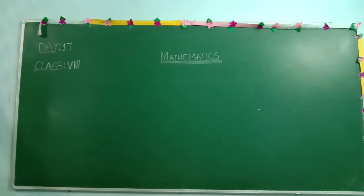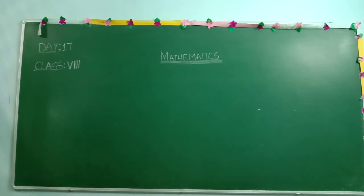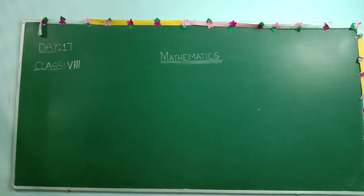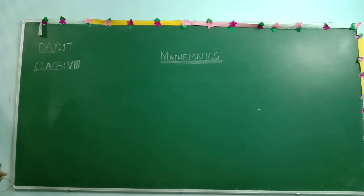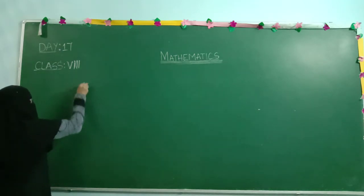Here we are going to study distributive property of multiplication over addition. In this property we are not checking all four basic operations separately. At a time we are having two operations — multiplication and addition. In previous properties we checked all four basic operations separately, but in distributive property two operations are present at a time: multiplication and addition. One more variation is multiplication over subtraction.